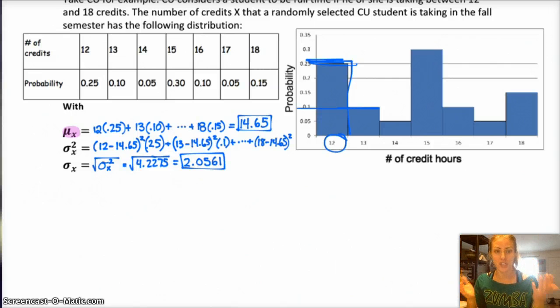So, that is our distribution of the random variable x and that's the shape and the center and the spread. Okay? So, then we're going to look at if we change our random variable and we talk about, maybe, tuition instead of number of credit hours, how does that affect the distribution? So, let's move on to the next example.